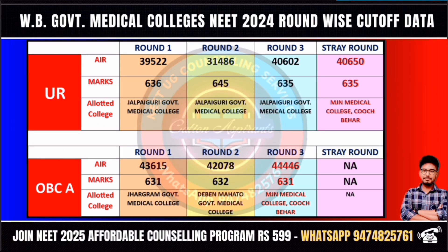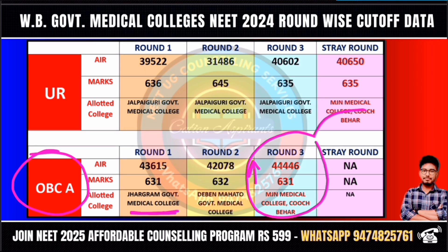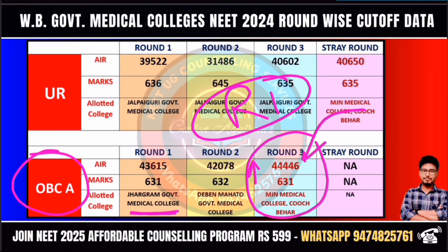We will discuss the OBC category. The OBC category with 631 marks can get government medical college. Round 2 cut-off is high as usual, and Round 2 will proceed to government medical college as expected. When Round 3 came, the cut-off dropped. This student was considered for KPC Medical College in Round 3 under three-month counseling, and OBC category is one important factor.